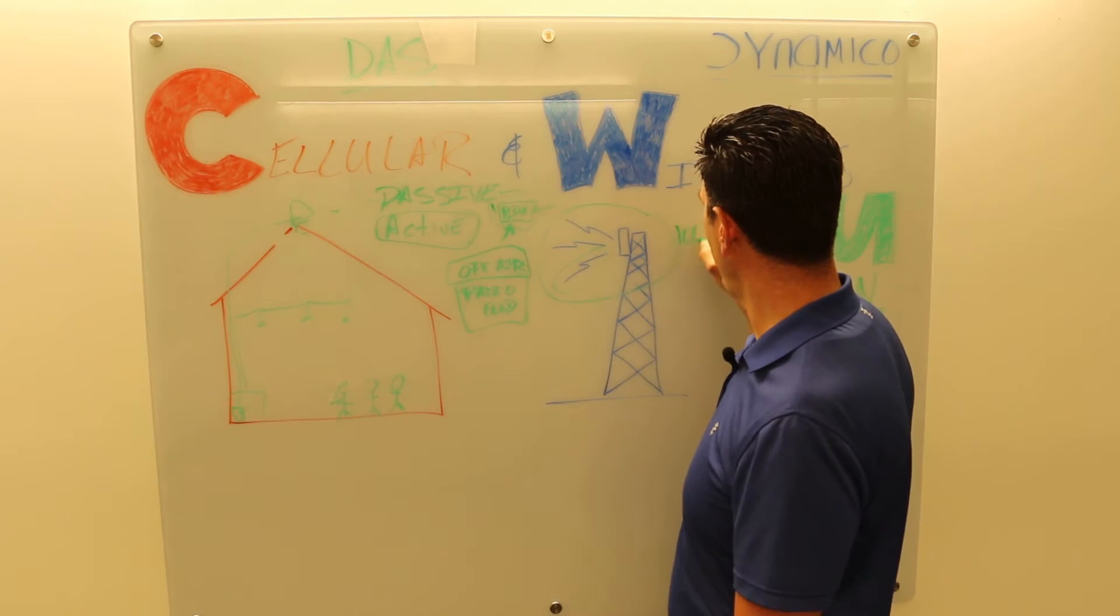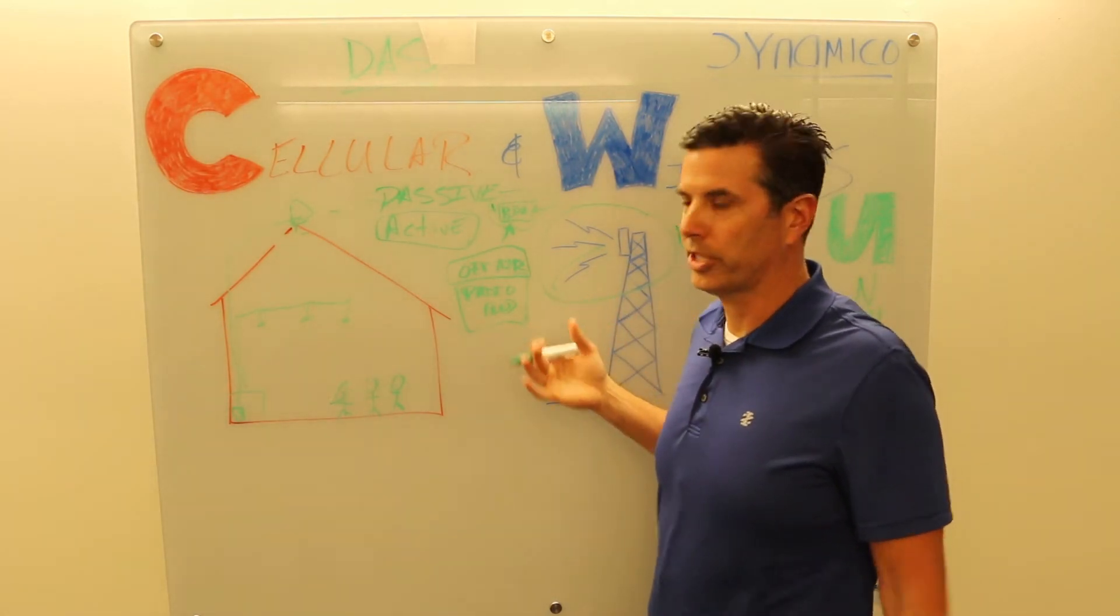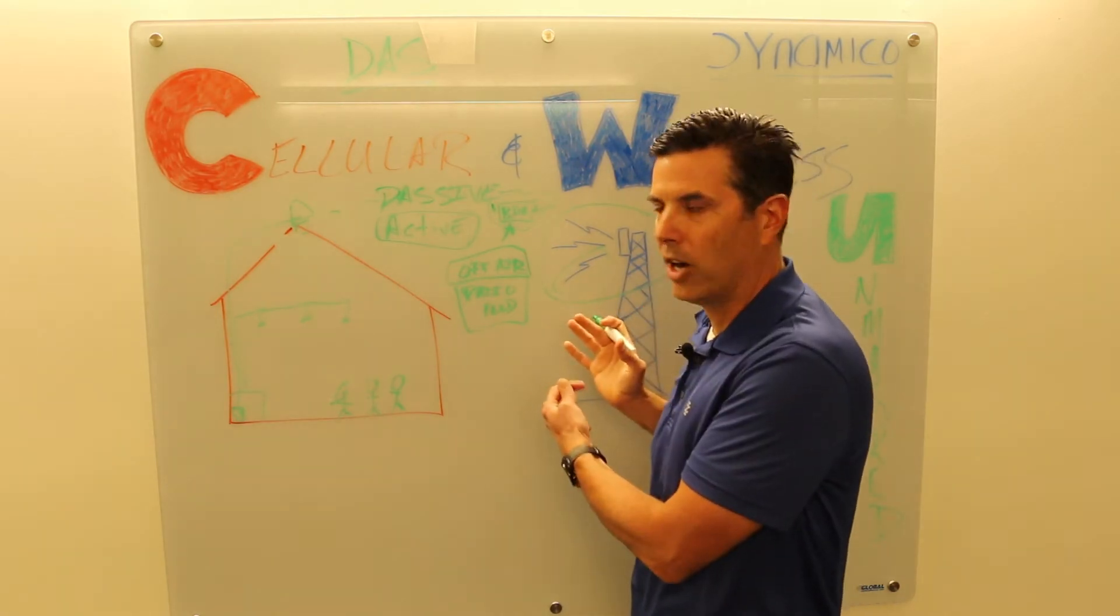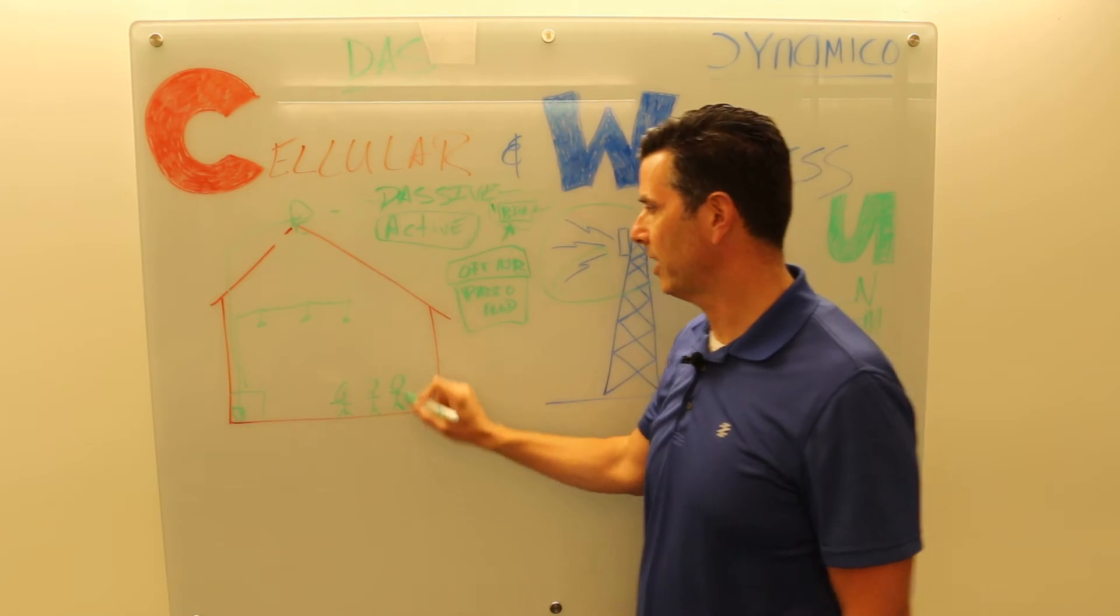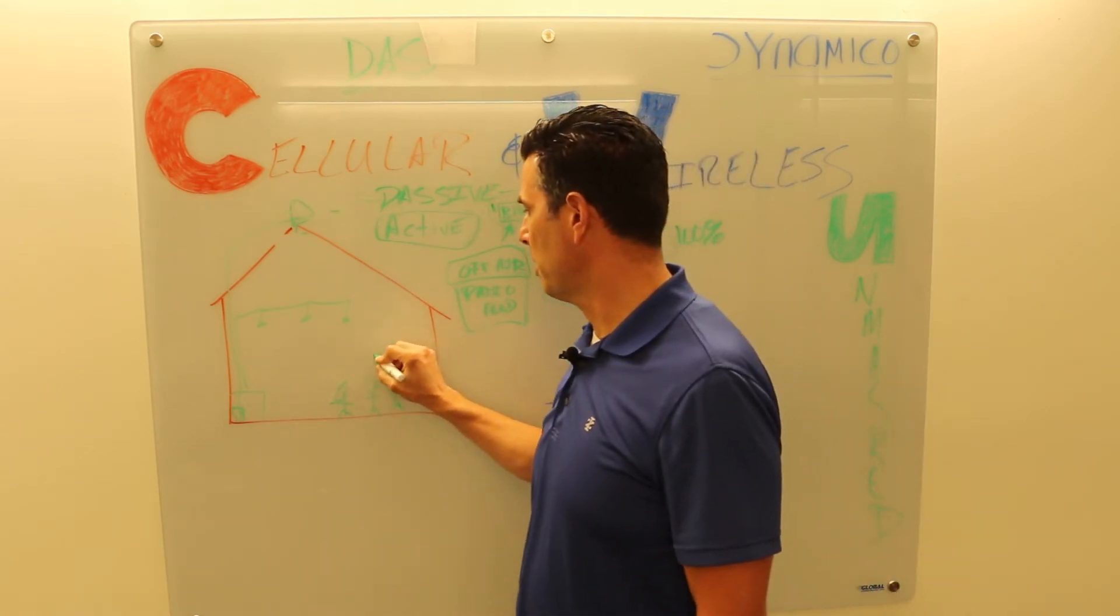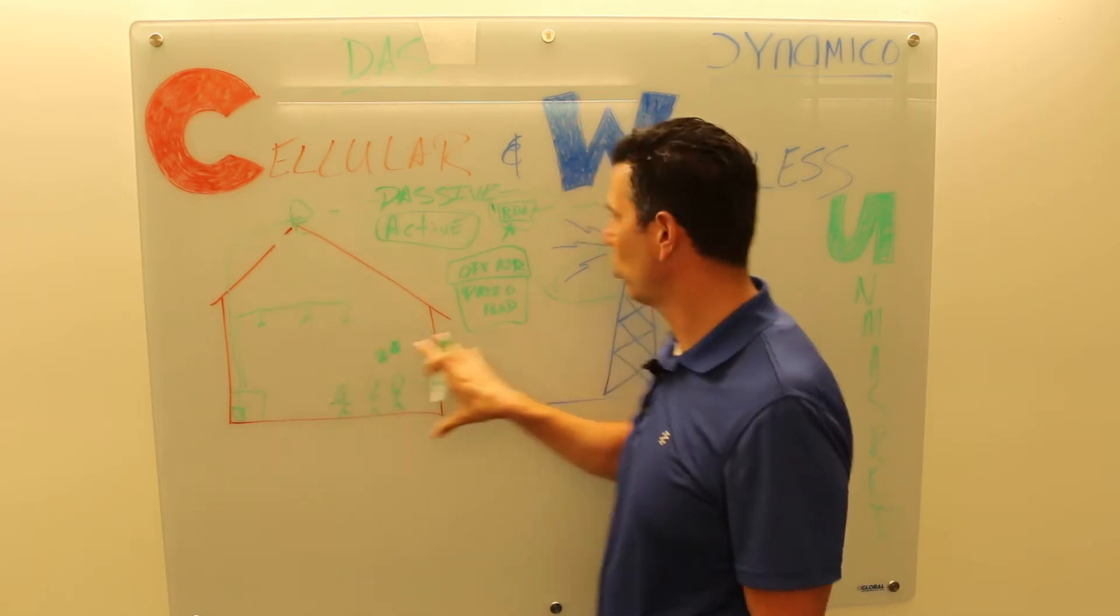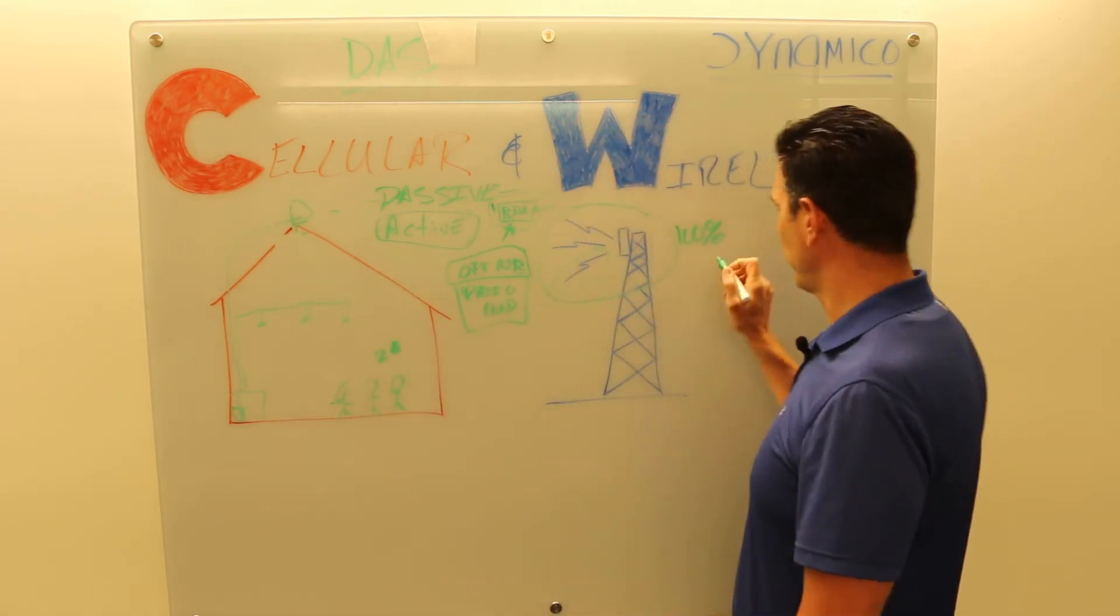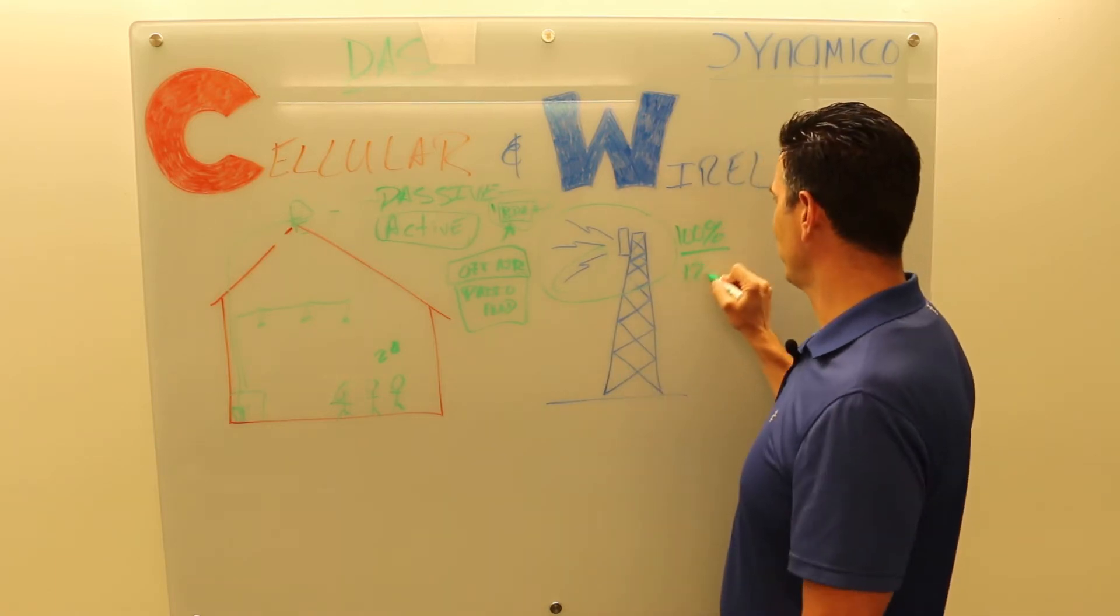Here's why: if this macro site that you're using with this bi-directional amplifier to help these people out is already at 100% capacity, it's got room for 100 users and it's got 100 users on it right now, if you put a BDA system in this building and this building has say 20 people in it, you're now putting these 20 people on this macro site which is already at 100% capacity.